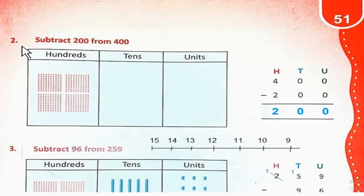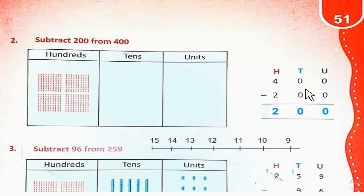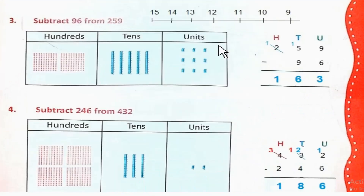Number 2: Subtract 200 from 400. 400 से 200 को minus करें। 0 minus 0 = 0, 0 minus 0 = 0, 4 minus 2 = 2. So the answer is 200. Number 3: Subtract 96 from 259.